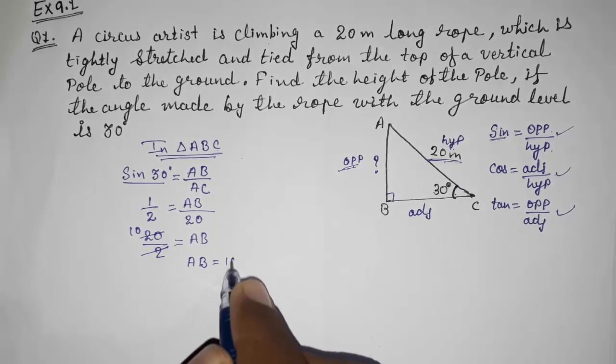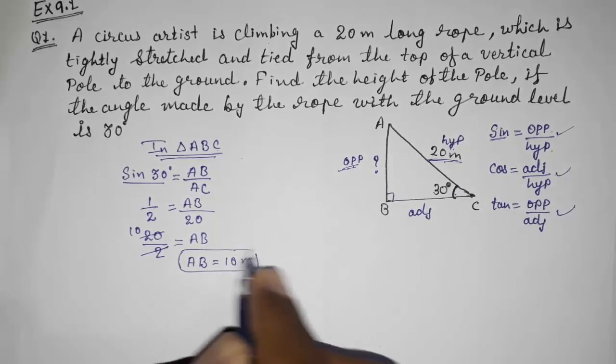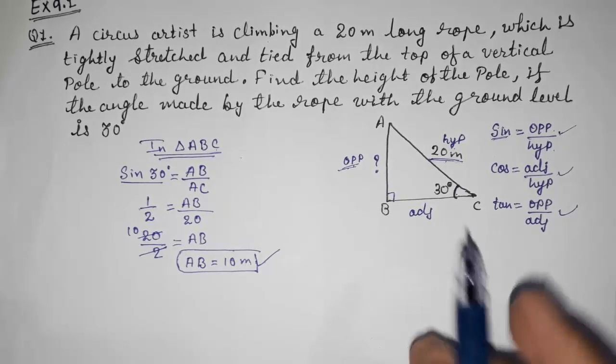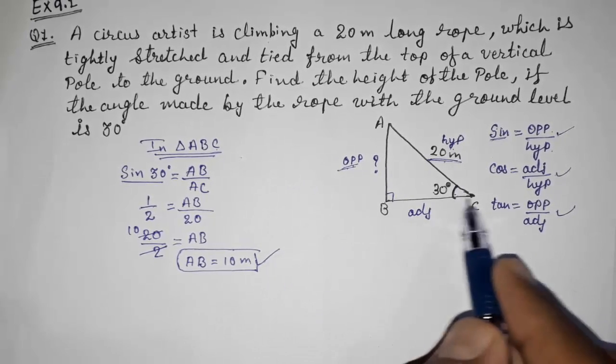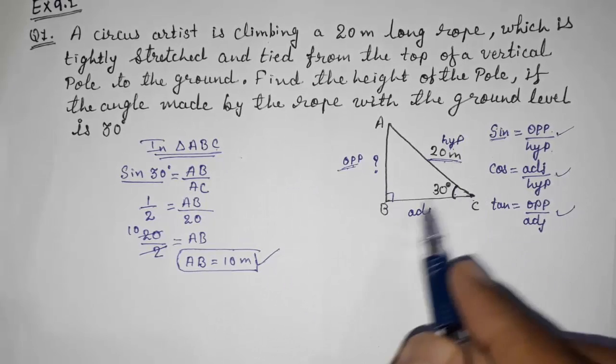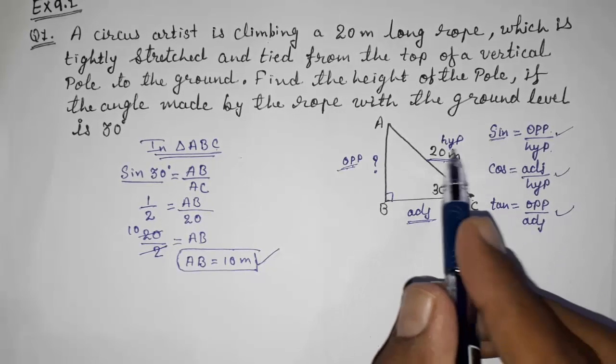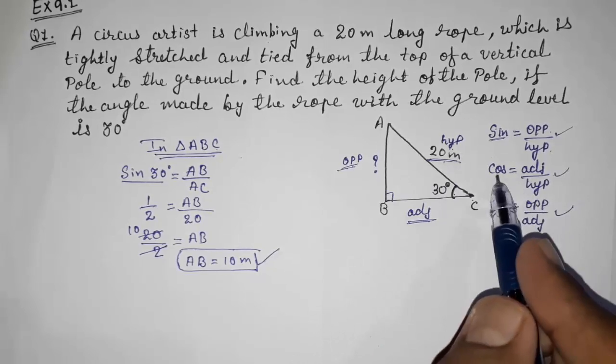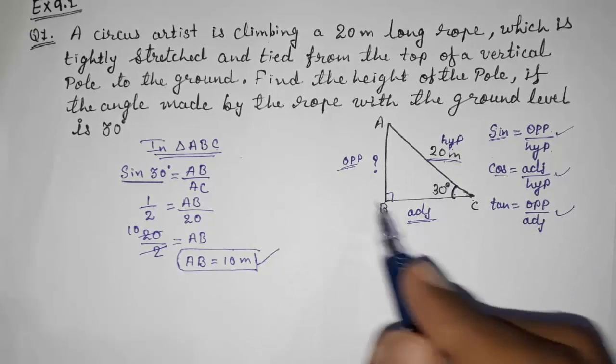So the height of the pole is 10 meters. This way we can solve this sum. If they tell you to find out the base, then you can find out the base also. Now you have to find out adjacent, and you are having hypotenuse, so you can find out that with cos 30 and putting the value.